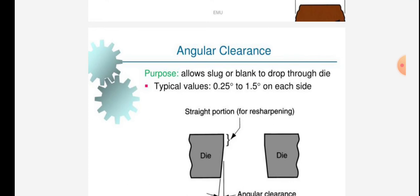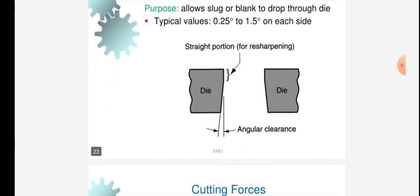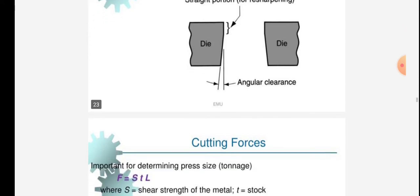Clearance purpose: allow slug or blank to drop through die. Typical values are 0.25 to 1.5 degrees on each side. Straight portion for resharpening. The angular relief is given. The die is given.